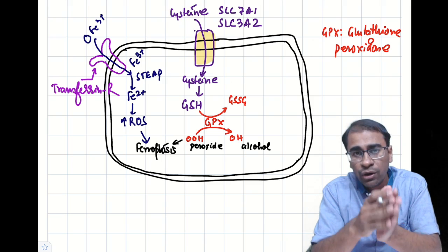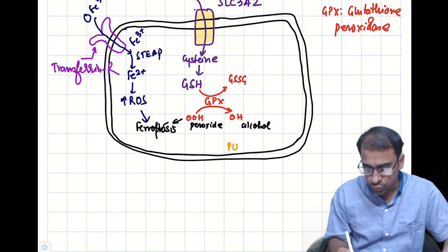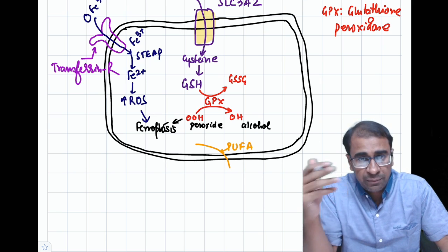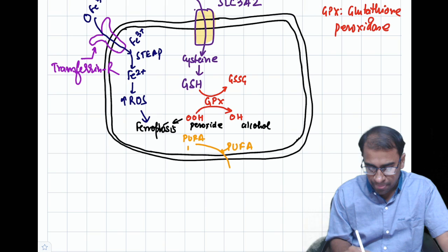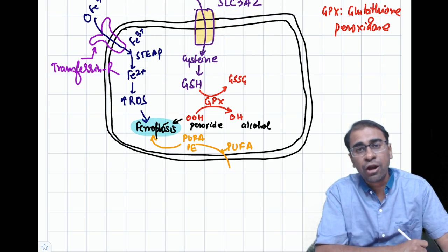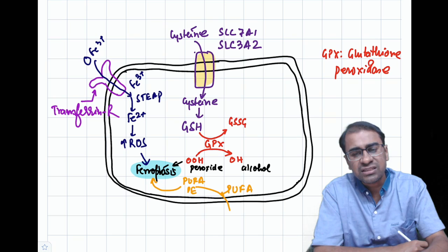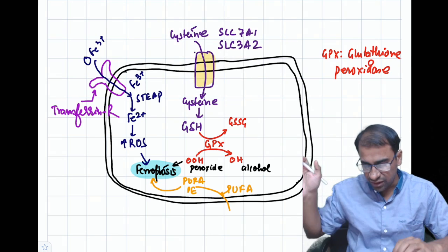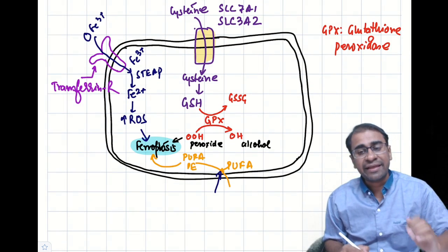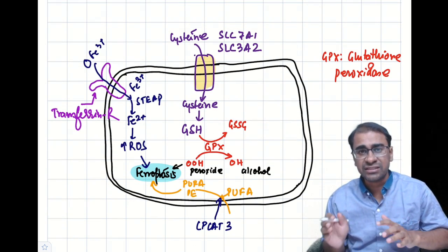There is also a third mechanism involving polyunsaturated fatty acids (PUFAs). PUFAs are converted to an oxidized phospholipid form called PUFA-PE (phosphatidylethanolamine), and this increase in PUFA-PE can also lead to ferroptosis. The enzyme responsible for this conversion is LPCAT3.